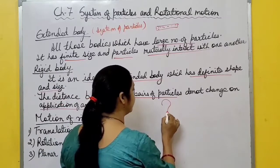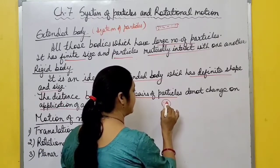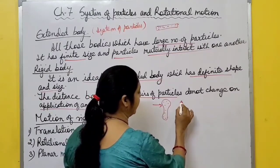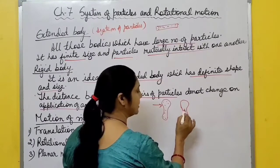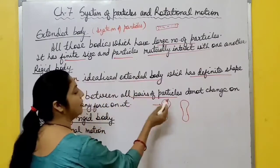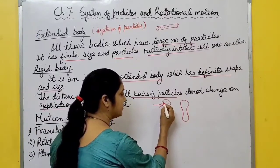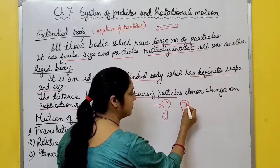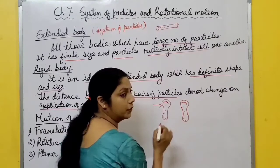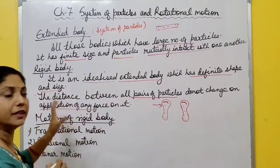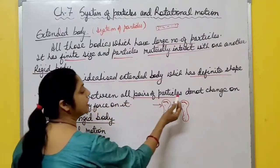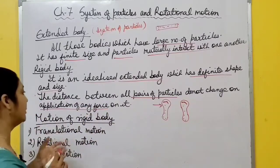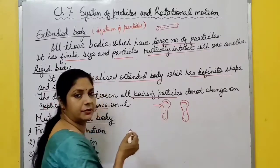In physics terms, a rigid body is one where the distance between all pairs of particles does not change on application of any force. Suppose this is a rigid body with large number of particles. After applying force, the shape and size remains the same and the distance between all pairs of particles remains the same. That body is called a rigid body.